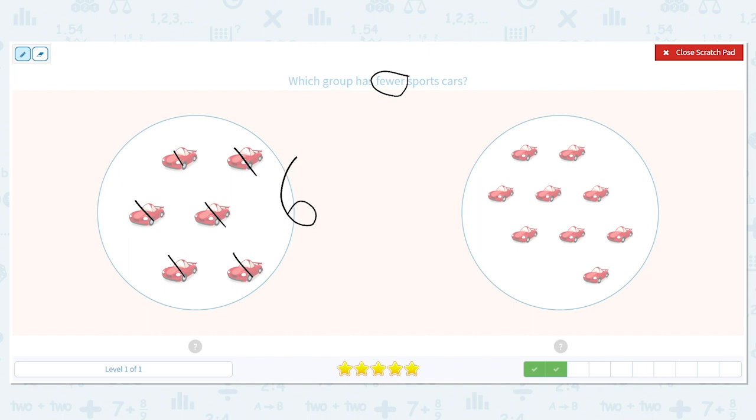Six. Next group, let's count. One, two, three, four, five, six, seven, eight, nine. Okay, so we have six and nine. Which is fewer or lower? Six is. Good job.